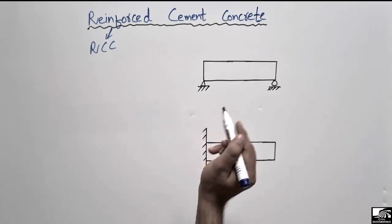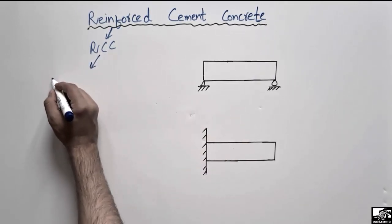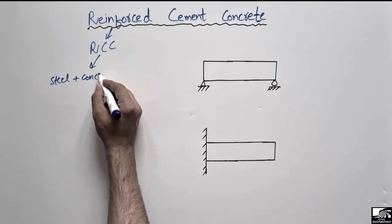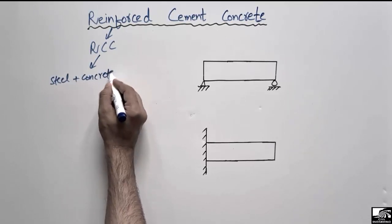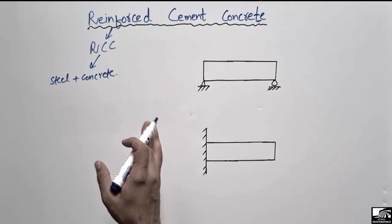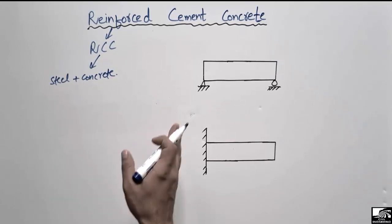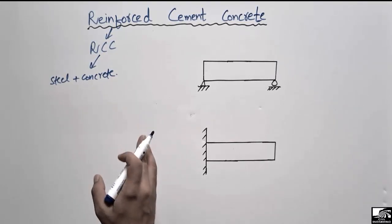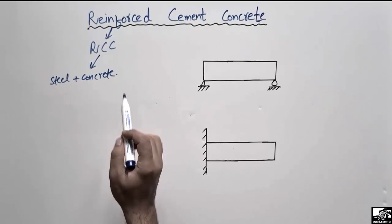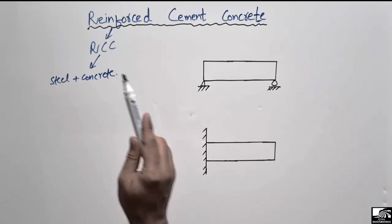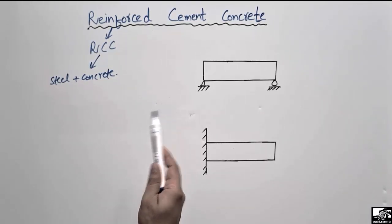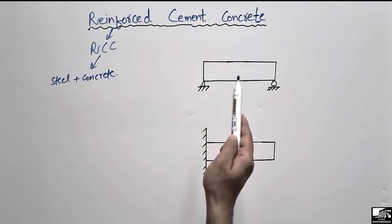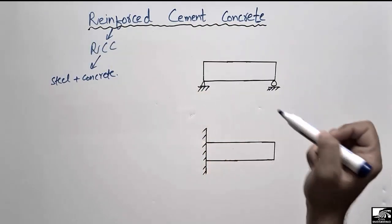RCC is a composite material made of two materials: steel and concrete. In this lecture, we are mainly focused on why we use reinforced concrete material, and why it is so commonly used in the construction of buildings, bridges, tunnels, and so on.